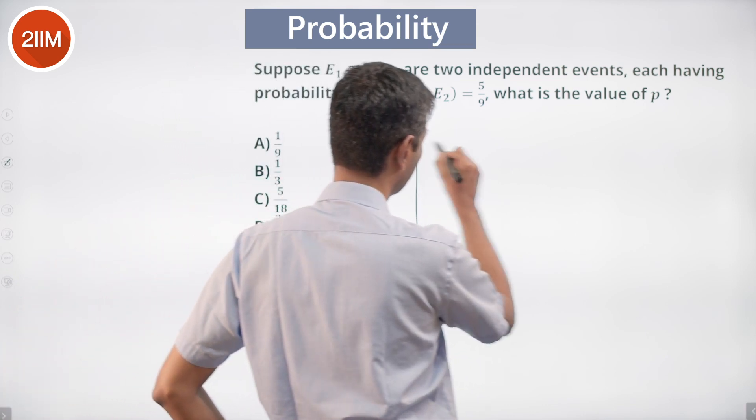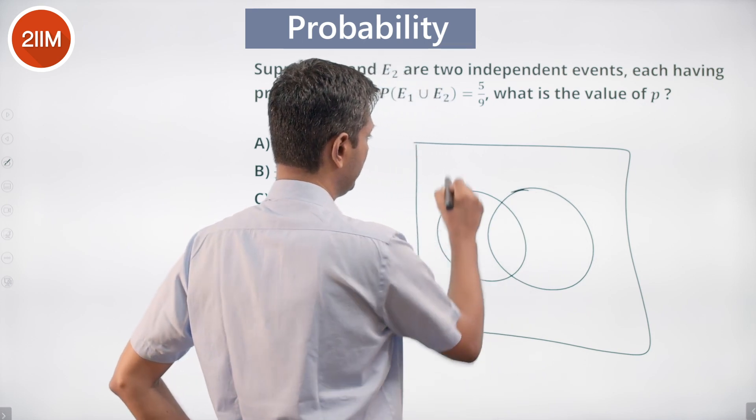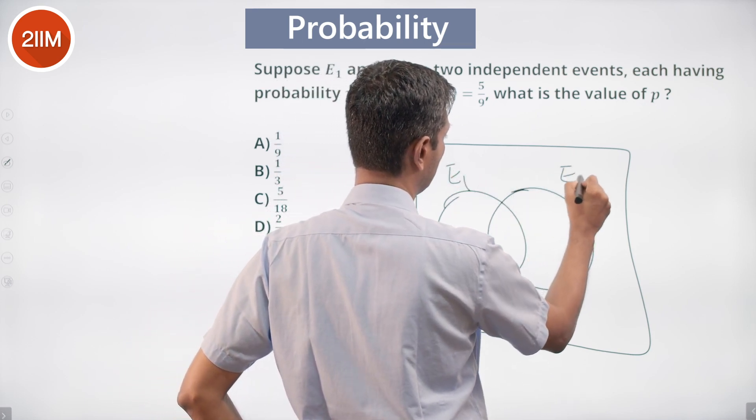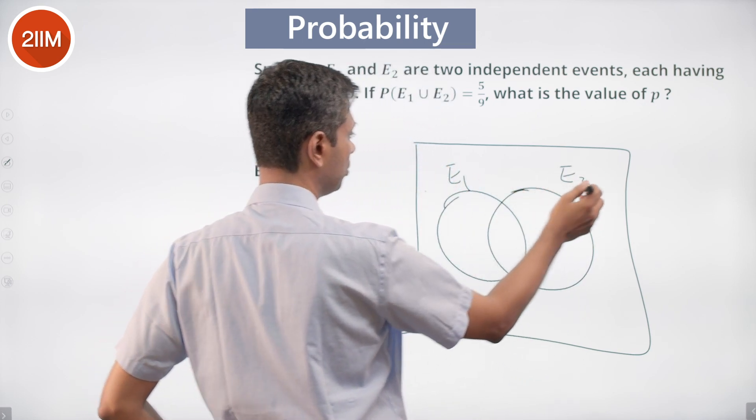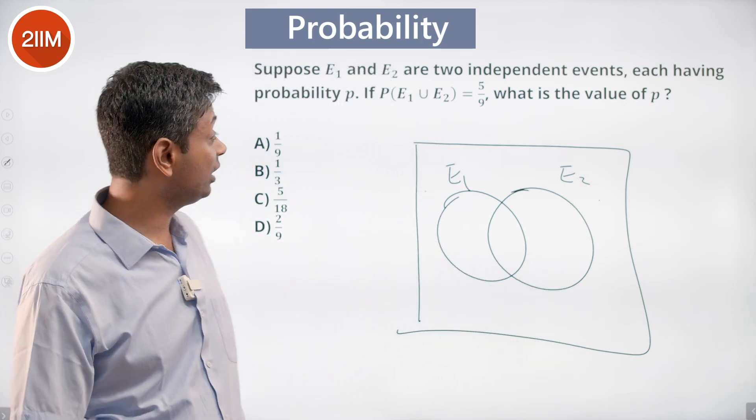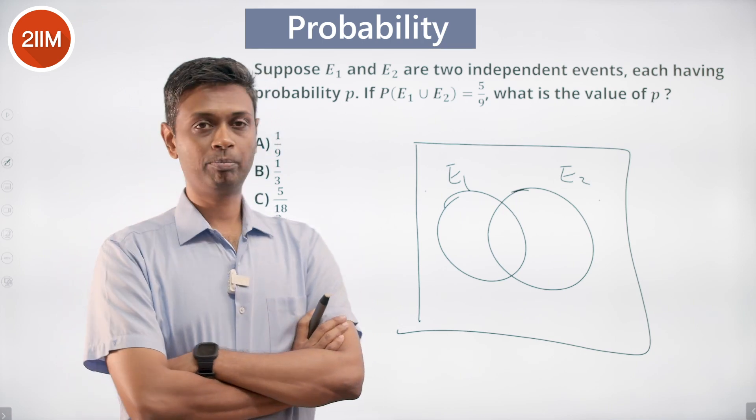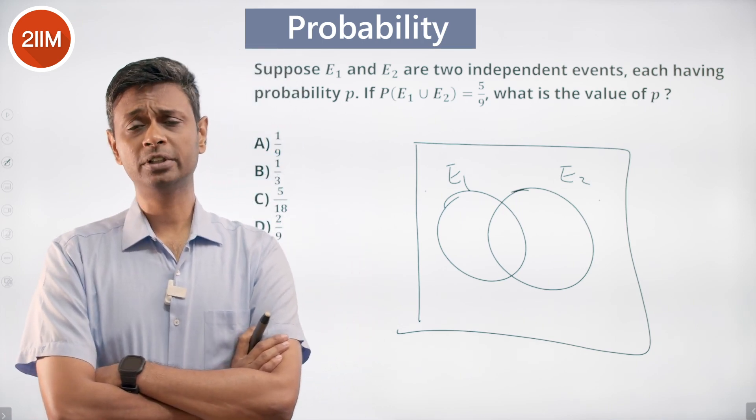So two independent events with equal probability. This is e1, this is e2, this has a probability p, this has a probability p. Now, the key thing here is you have two independent events. So then the probability of both of the events happening is the product of the probabilities.